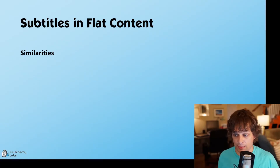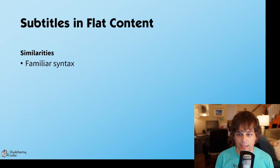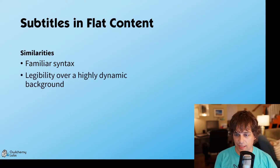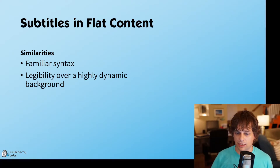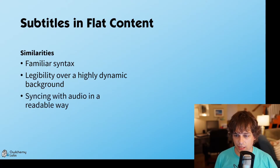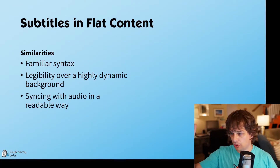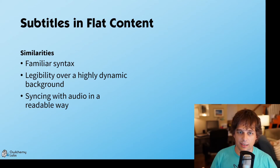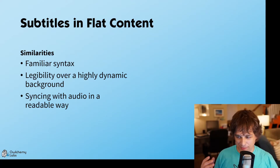Subtitles already exist in flat content, so what can we use and where do we have to deviate? Similarities we can grab from flat content include the syntax — familiar italics, bolding, dashes — things that have been developed for years that we can just reuse. Legibility over a highly dynamic background, where the background is going to be moving, light, or dark — that groundwork has already been laid in video. And syncing with audio in a readable way — we can't put the whole script up, nor individual words; we have to find some middle ground so people can understand what's happening without spending the whole time reading.